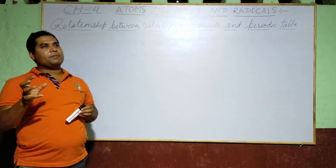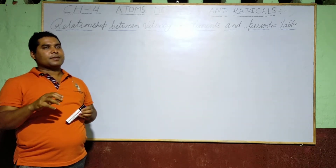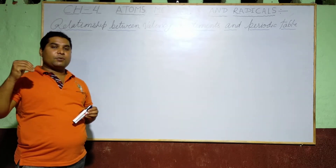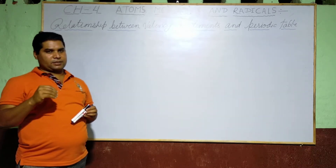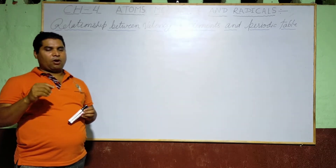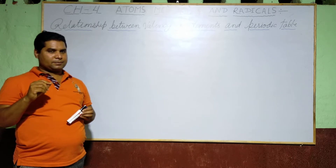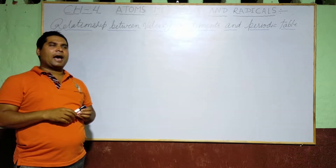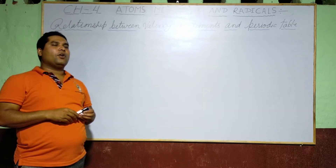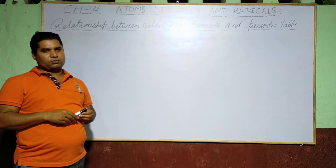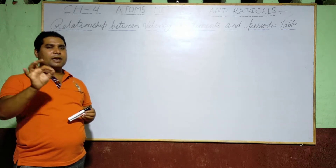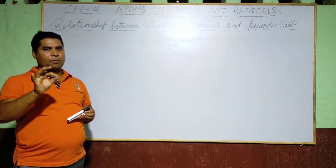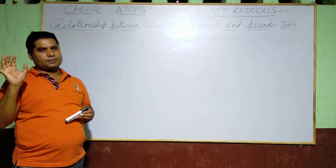What do you mean by a periodic table? A periodic table is a tabular arrangement of elements in vertical columns and horizontal rows, indicating the regular trend in the properties of the elements.